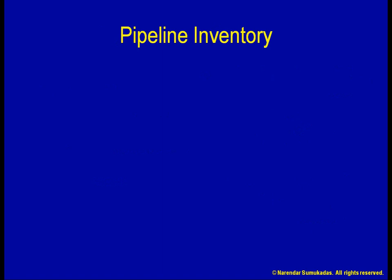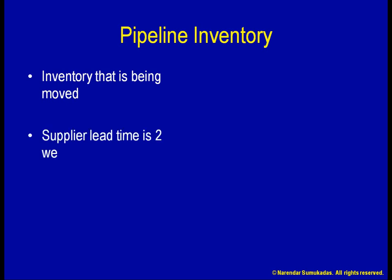Another form of inventory is pipeline inventory. Pipeline inventory is inventory that is being moved from one place to another. Let us say I have ordered something from my supplier. They've charged my credit card, but the material is going to take two weeks to get to me. The pipeline here is two weeks long, and my pipeline inventory is two weeks worth of material. Whatever my weekly demand is, twice that amount is my pipeline inventory.